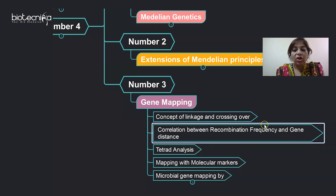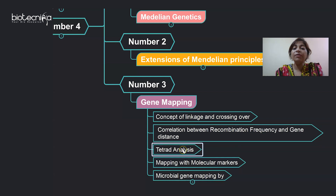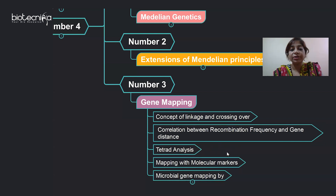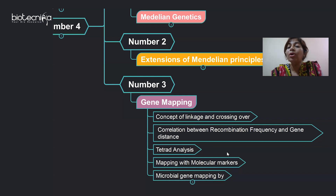Recombination frequency can be used for gene mapping in eukaryotic diploid organisms. But for fungi, which are eukaryotic but haploid, gene mapping is done using tetrad analysis. There are two types: ordered tetrad analysis and unordered tetrad analysis. Ordered tetrad analysis is used to find the distance between the centromere and a gene. Unordered tetrad analysis is used to find the distance between two different genes. You should be well versed with the formulas for both types.